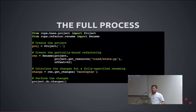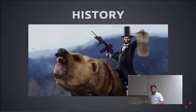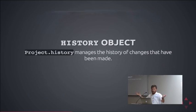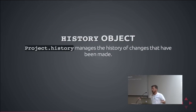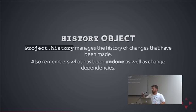One important feature of Rope is this notion of history. Every project has a history list that manages changes that have been made and also changes that have been undone. So if I've made a change and I want to undo it, I can — and it also remembers what I've undone so I can redo it. It's fun to shuffle back and forth between different refactorings to see which one you like best, or which is most aesthetically pleasing.